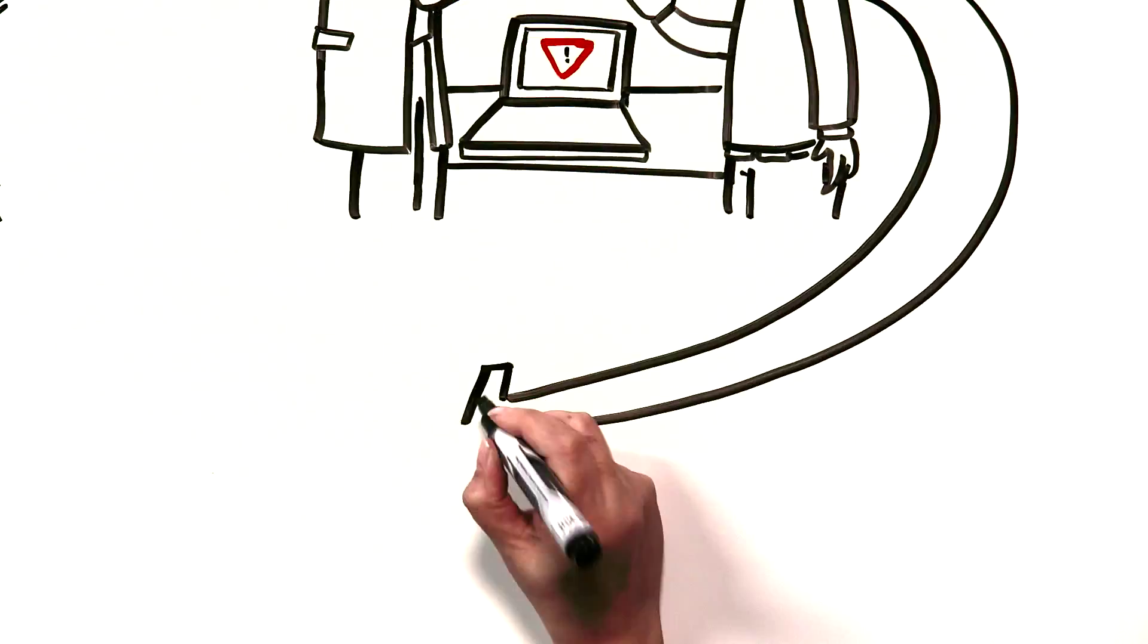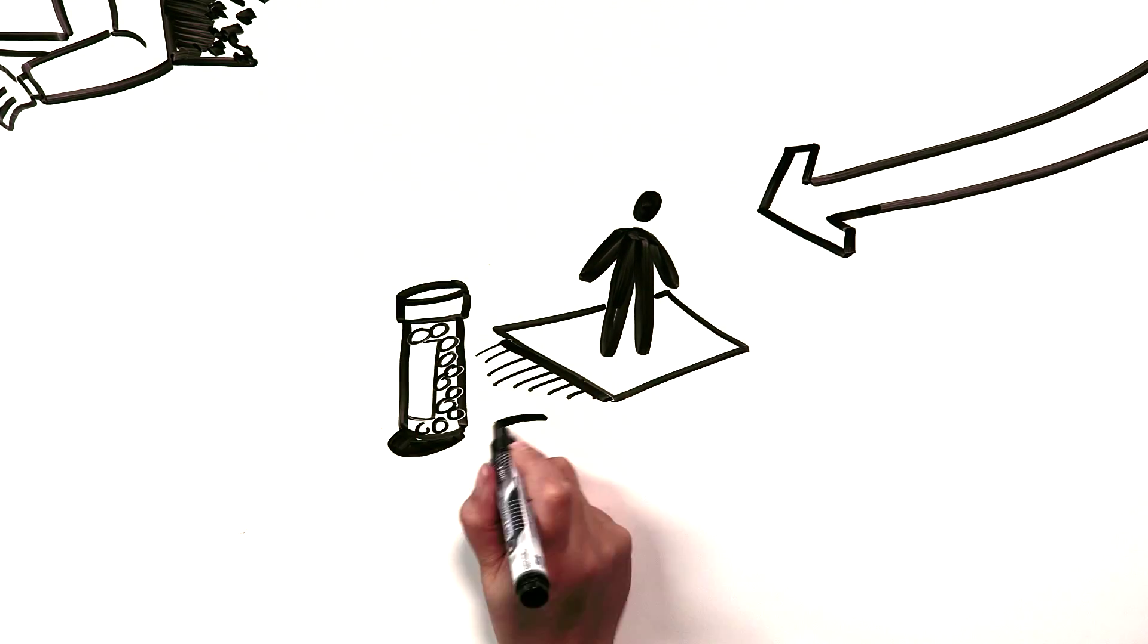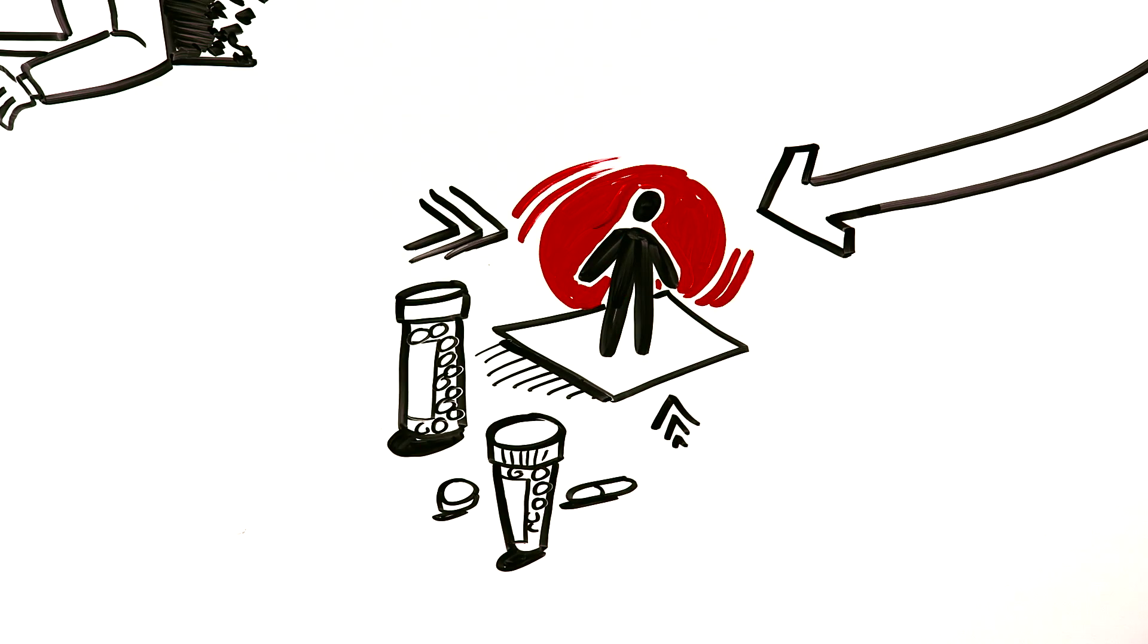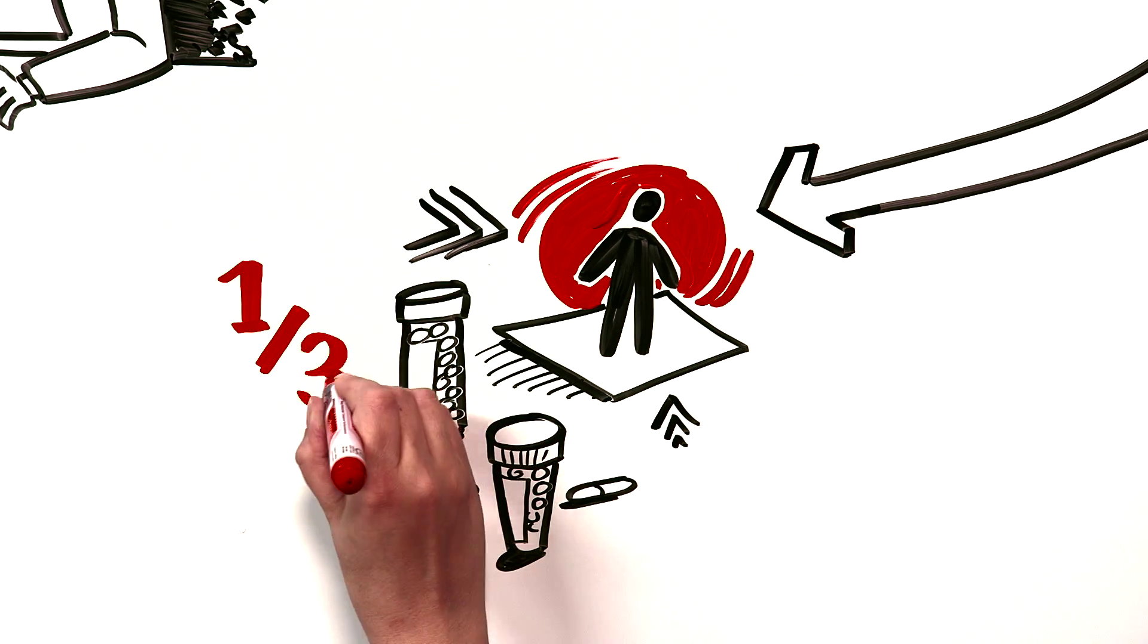We can usually manage any bleeding that might occur on anticoagulants, but once a stroke occurs in an AFib patient, they have only about one in three chance of a good recovery.